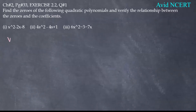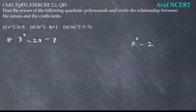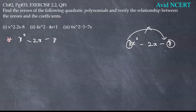The first step is to find the factors of x squared minus 2x minus 8. We have 1·x squared, so we multiply 1 and 8. We need to find two numbers: when you multiply them you should get 8, and when you add or subtract those numbers, you should get 2.